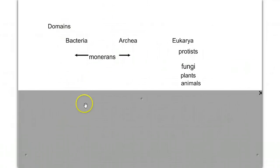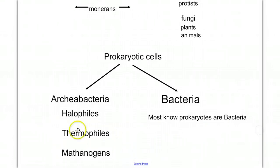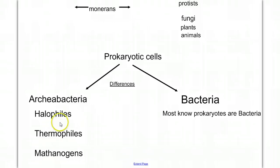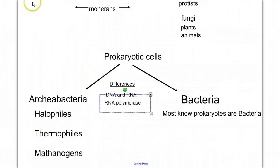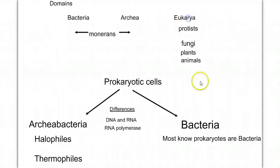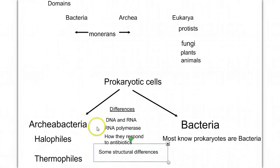Let's look at this split between the archaea bacteria and the bacteria. All cells that are prokaryotic belong to one of these two domains. The differences between the archaeabacteria and bacteria include significant DNA and RNA differences in terms of how they're designed and used, some differences in the important enzyme RNA polymerase — where the archaeabacteria's RNA polymerase is more similar to that in the Eukarya than it is to the bacteria — how they respond to different antibiotics, and some structural differences.